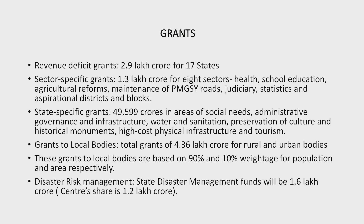Over the 2021-26 period, the following grants will be provided from the Centre's resources. Revenue deficit grants: 17 states will receive grants worth Rs. 2.9 lakh crore to eliminate revenue deficit. Sector-specific grants of Rs. 1.3 lakh crore will be given to states for 8 sectors, namely health, school education, higher education, implementation of agricultural reforms, maintenance of PMGSY roads, judiciary, statistics, and aspirational districts and blocks.